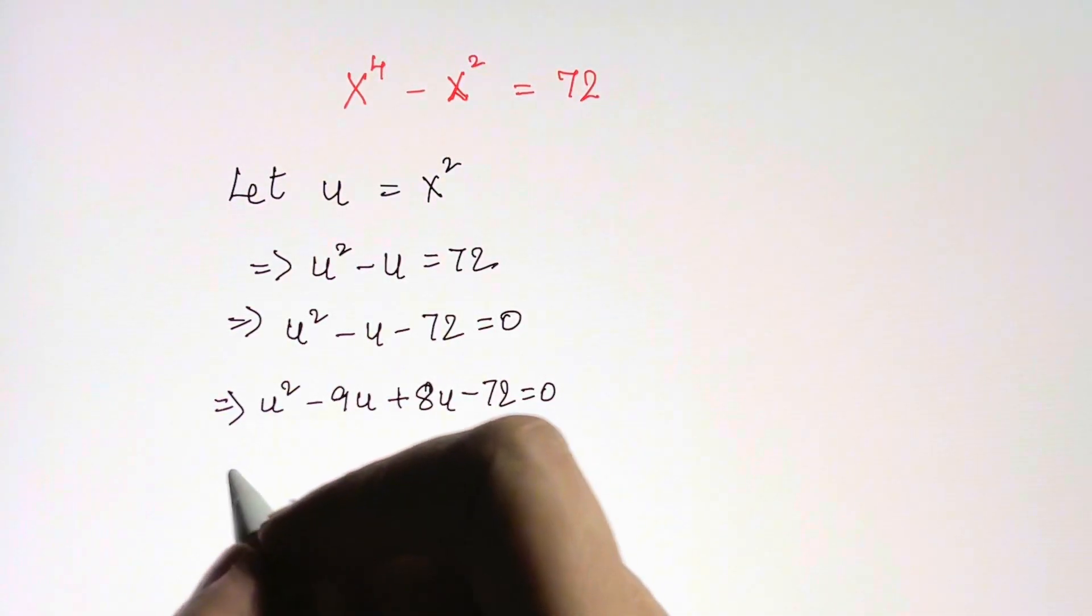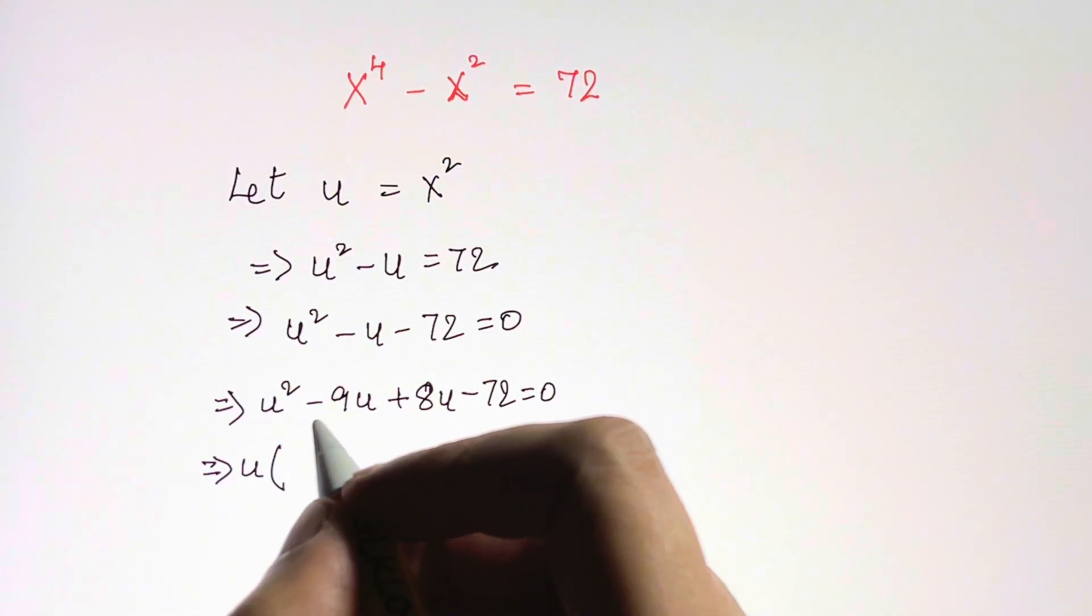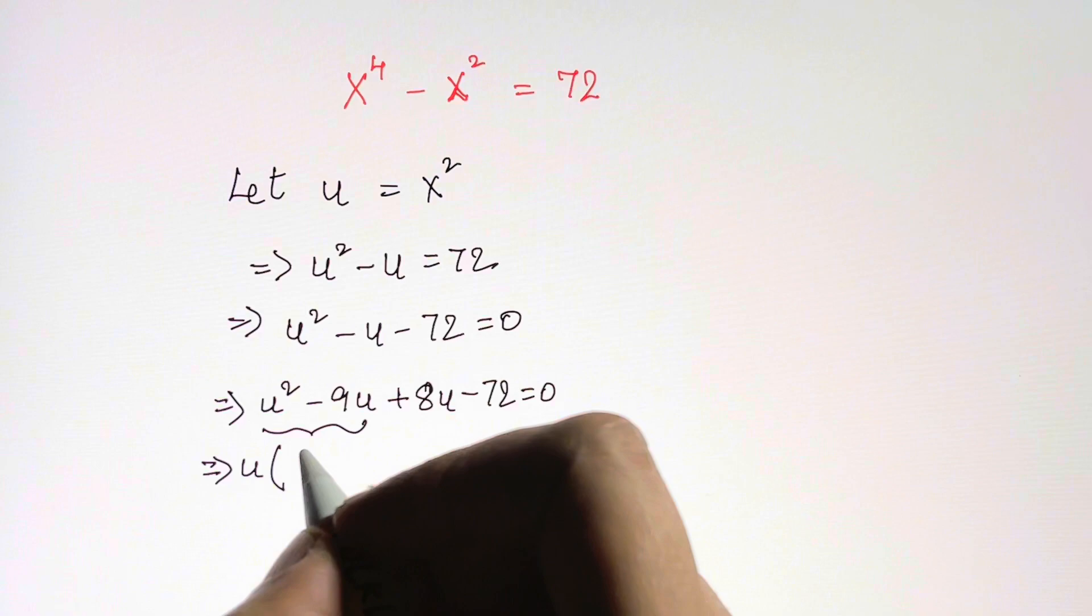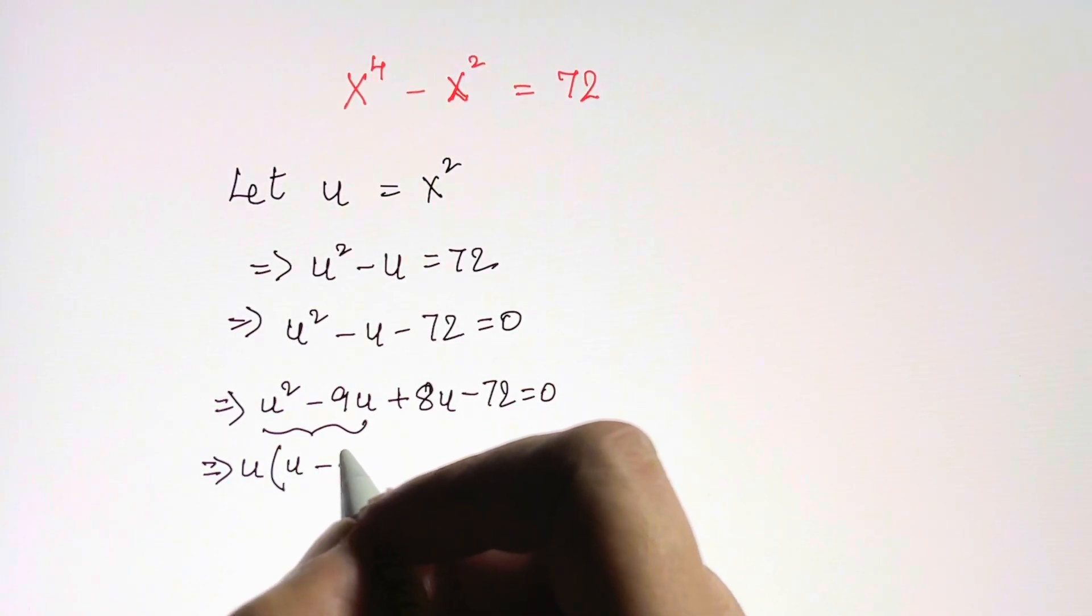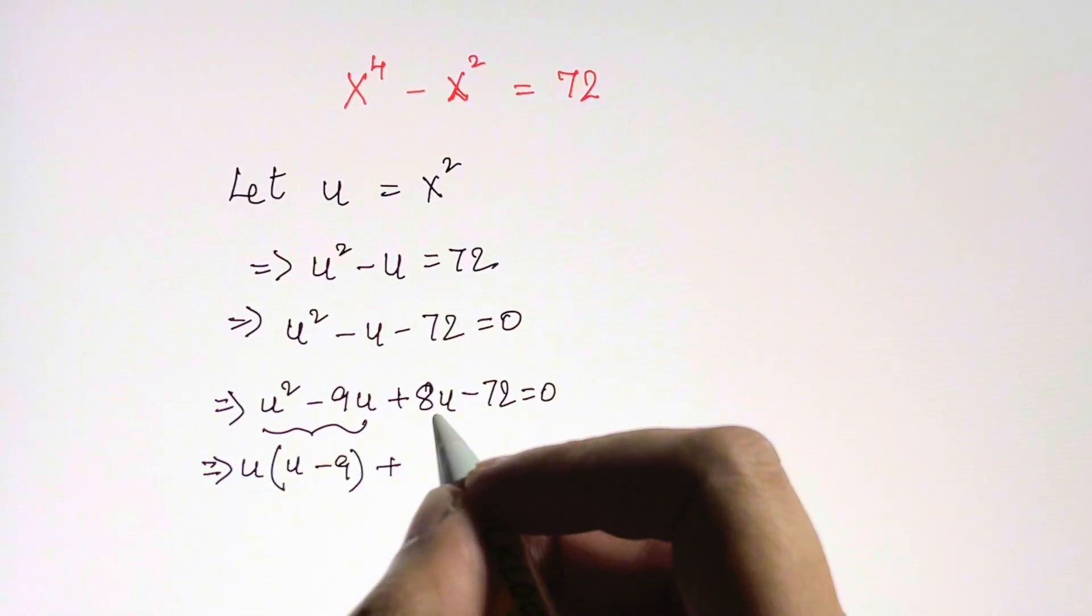Now we'll just take u common from the first two terms, so we are left with u minus 9, and from the other two terms we're going to take 8 and we're left with u minus 9 is equal to 0.